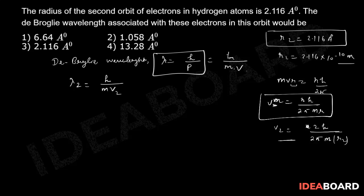We can substitute the value of v2 in the de Broglie wavelength. So lambda 2 equals h upon m into 2h upon 2π m into r2. We can observe that m and m will be cancelled out, h and h is cancelled out, 2 and 2 is cancelled out. This whole term will go in numerator, which is nothing else but π into r2.